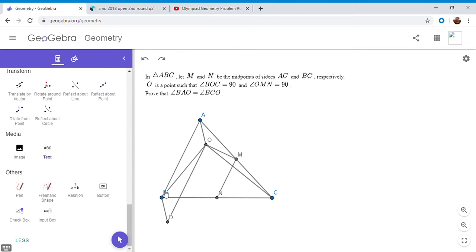So we're trying to show that BDCO is a cyclic quadrilateral. And like I mentioned, the circumcenter of BOC is N, because O lies on the circle with diameter BC.